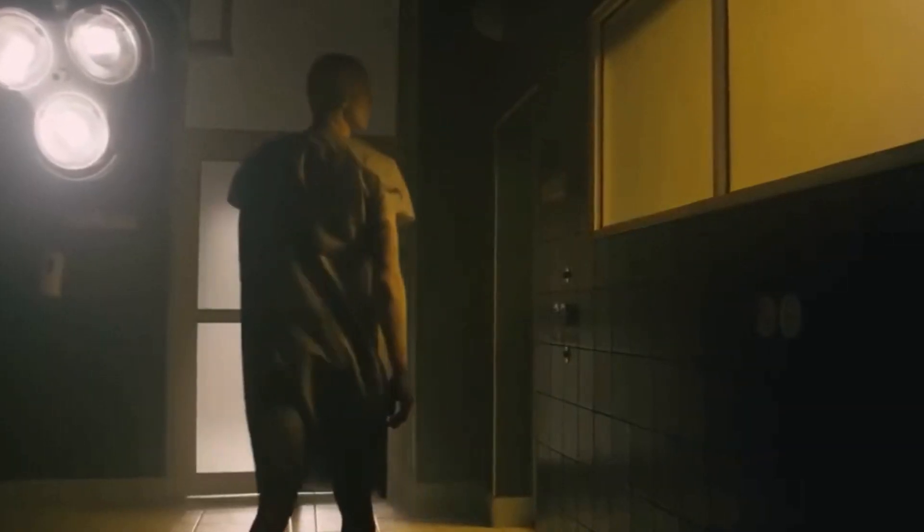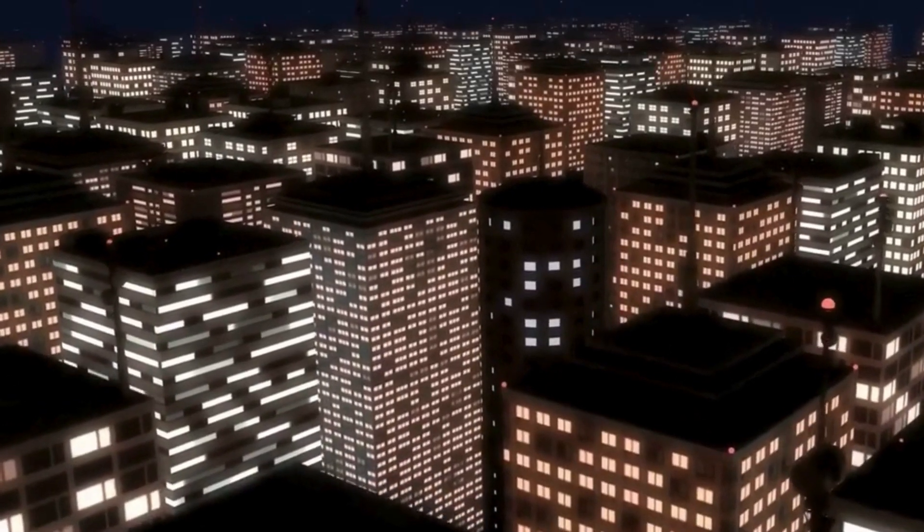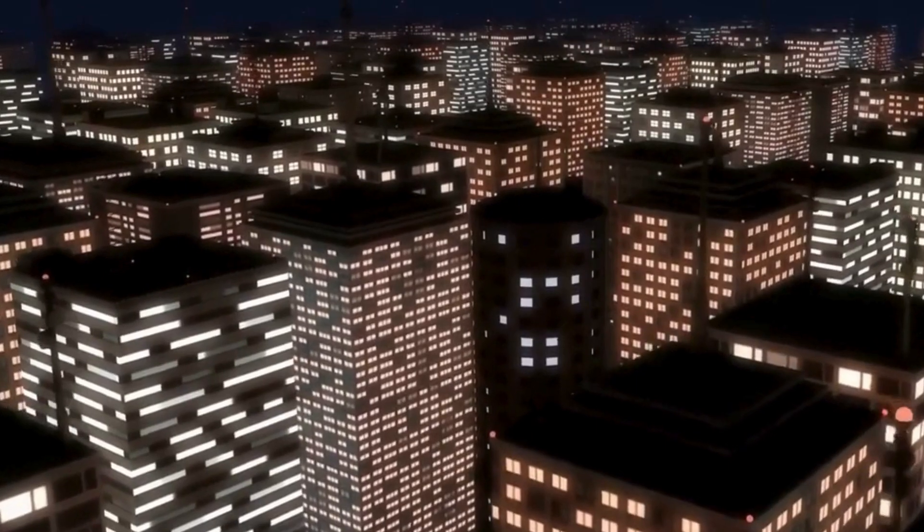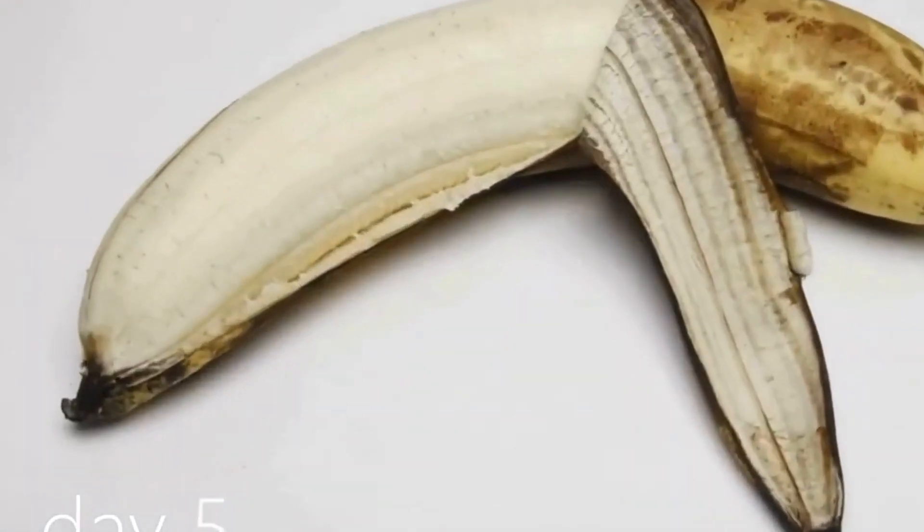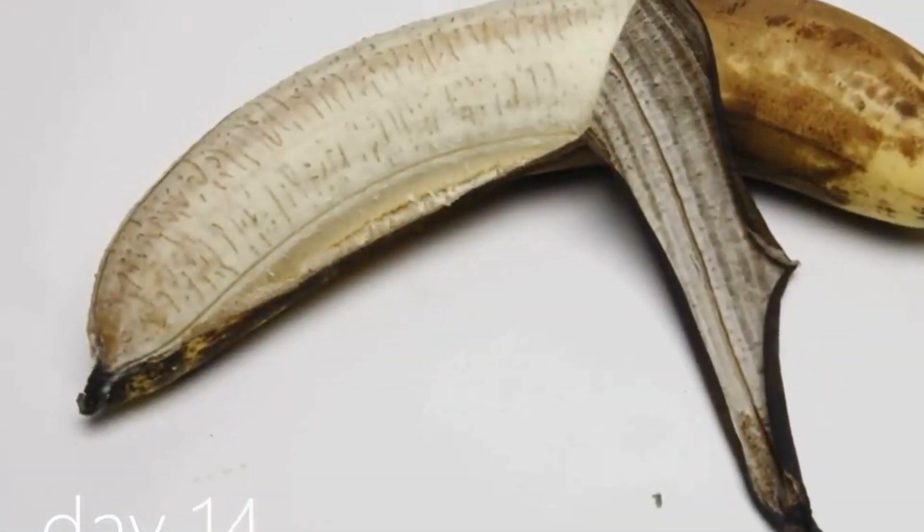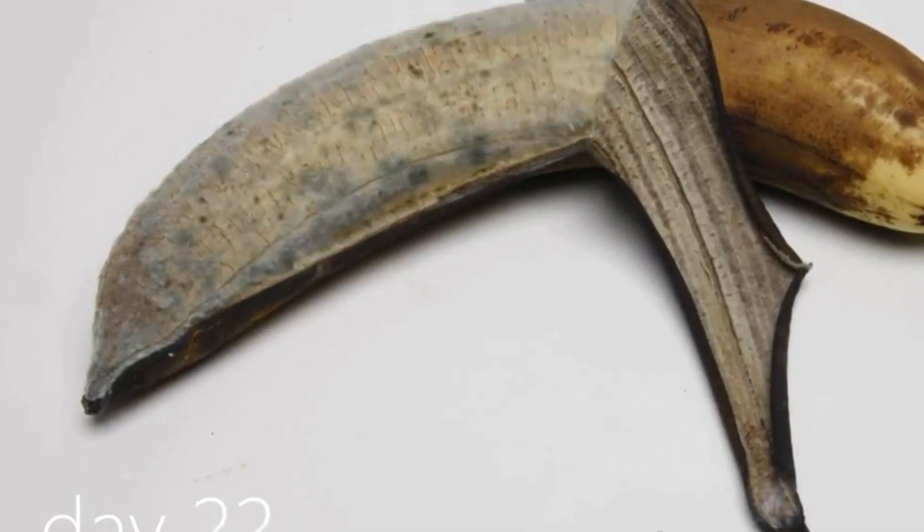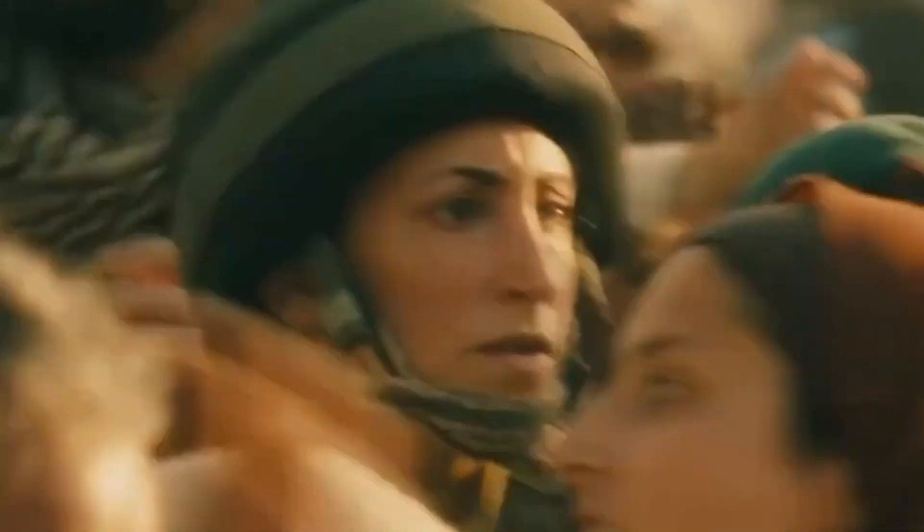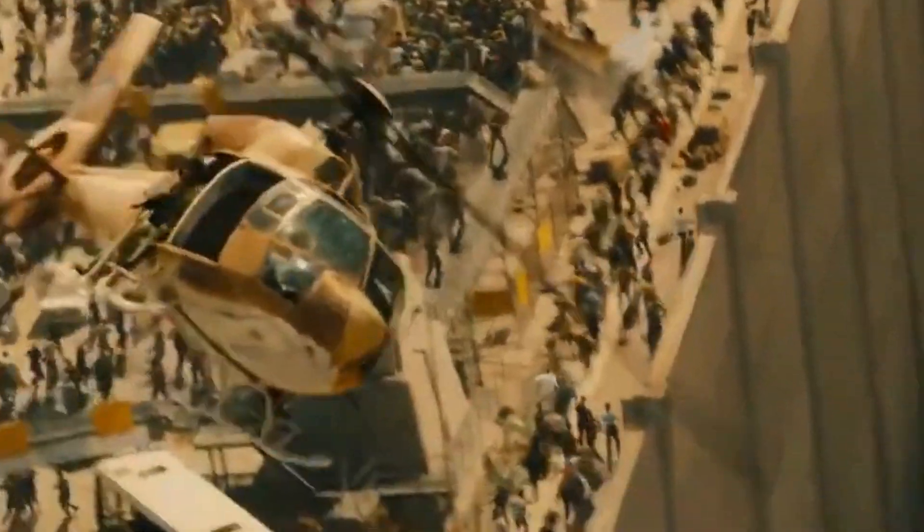And the first thing threatening the human race would be food scarcity. Because with the power outage, all refrigerators stop working, and foods begin to spoil, becoming severely inaccessible to people. Consequently, chaos ensues worldwide, and people resort to killing each other to obtain food.